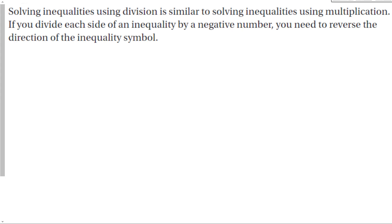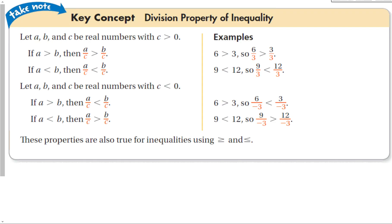Solving inequalities using division is similar to solving inequalities using multiplication. If you divide each side of an inequality by a negative number, you need to reverse the direction of the inequality, just like with multiplication. Whatever I do to one side, I must do to the other — that rule never changes. If C is positive, the inequality stays the same. If C is negative, the inequality changes from greater than to less than, or less than to greater than, and the same applies with or equal to.